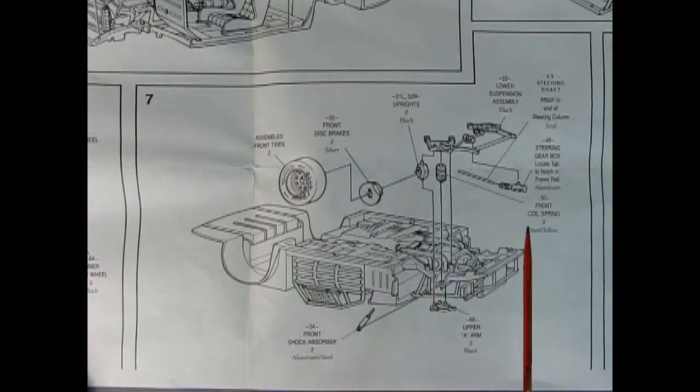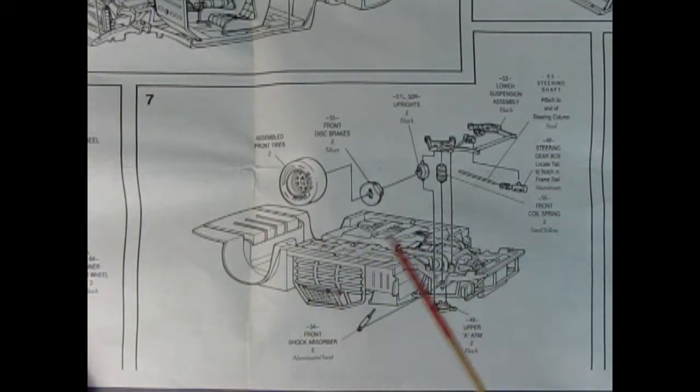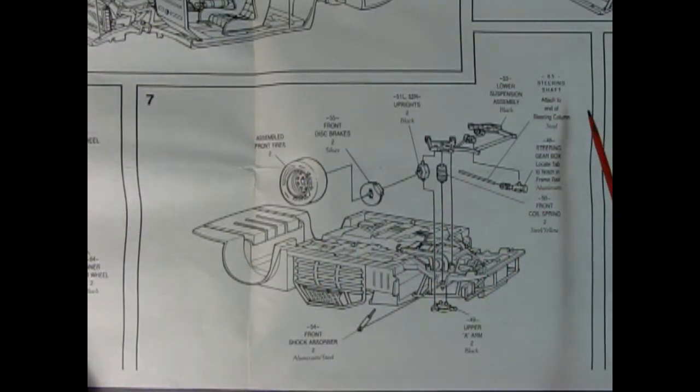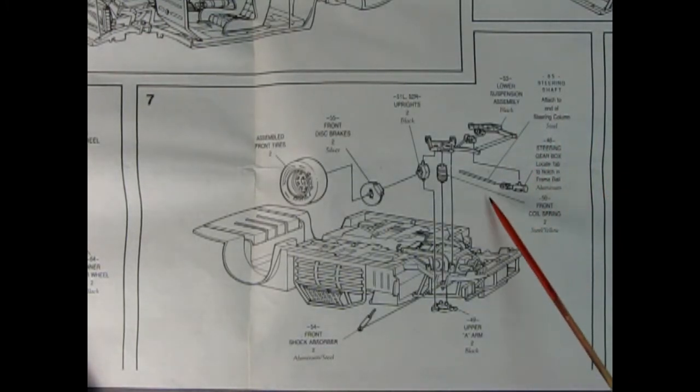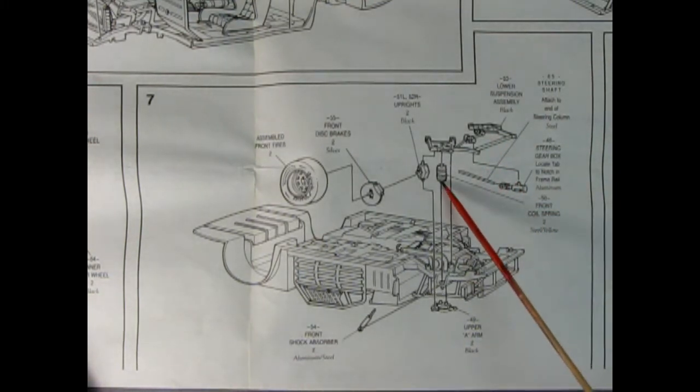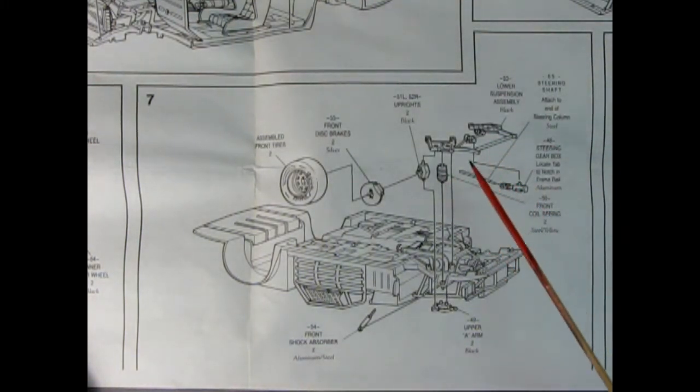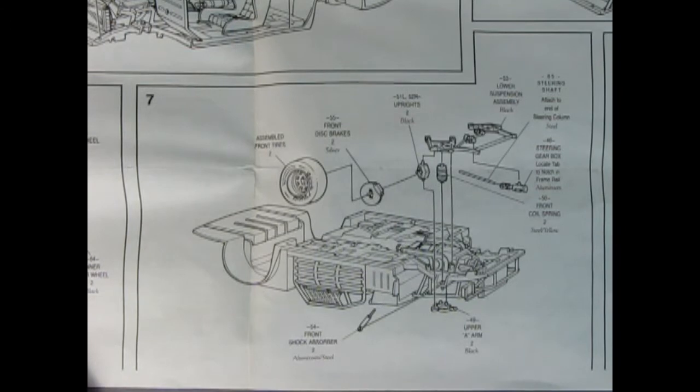And here we have panel 7. And this is the undercarriage of our chassis going together now. We've got the steering shaft and the steering gearbox, the lower suspension, the springs. There's gonna be one on each side guys. Then we've got our uprights here, and disc brakes in the front, and then we put our front wheels on. There's shock absorbers and upper A arms all as well. That's really highly detailed.